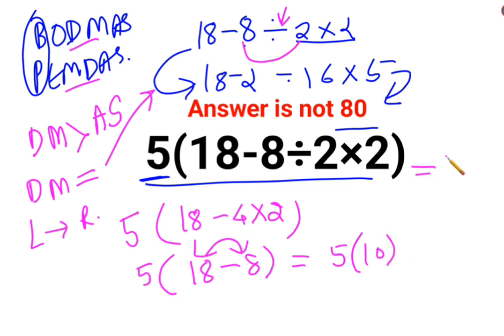So this comes out to be 5 multiplied by 18 minus 8 comes out to be 10. So answer for this question is supposed to be 50. I hope this is very clear to everyone. That's it for today. I will see you in the next video.